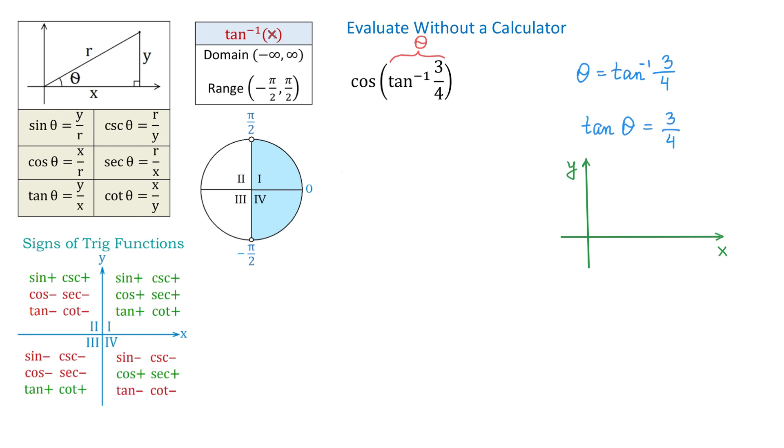From the definition of trigonometric functions, tangent of theta is y over x. Here to the right, tangent of theta is 3 over 4, which equals y over x. This means that y equals 3 and x equals 4.